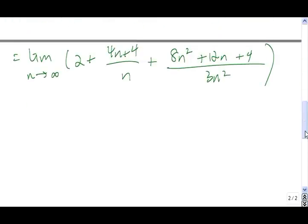So now we are ready to take the limit. As n goes to infinity, this plus 4 is insignificant, so we can ignore it. This gives us 4n divided by n, which the n's can cancel and we get just 4. Over here, the 12n and the 4 are insignificant because n is going to infinity and the n squared in the numerator is going to way overpower these guys. So that gives us 8n squared over 3n squared, which is just 8 over 3.